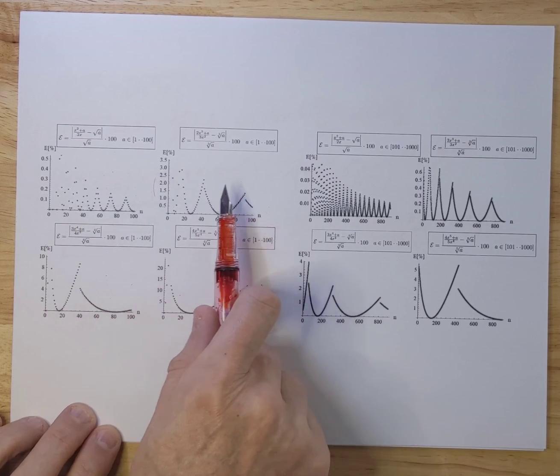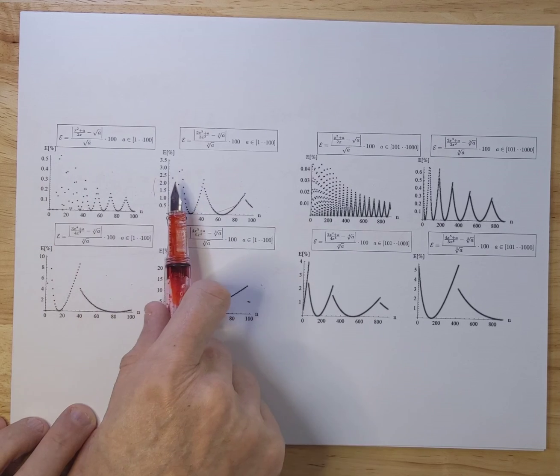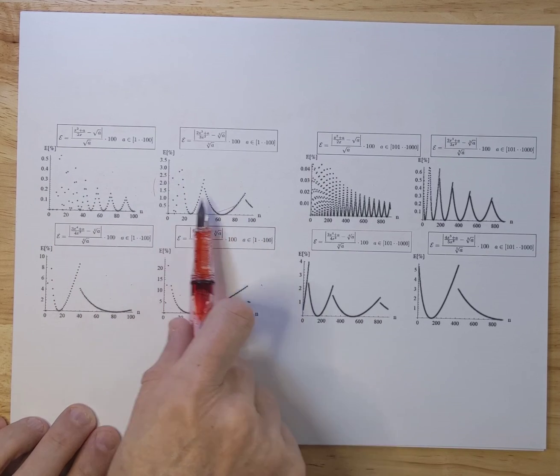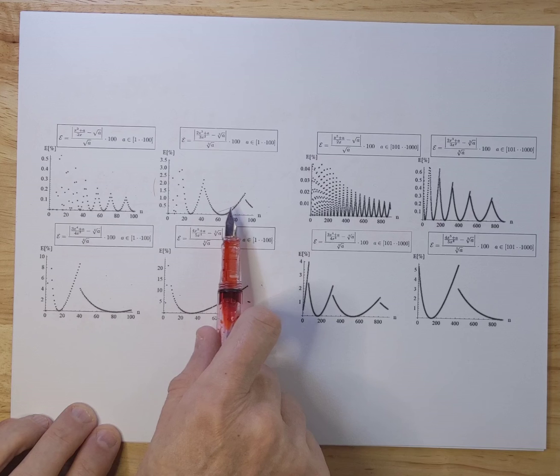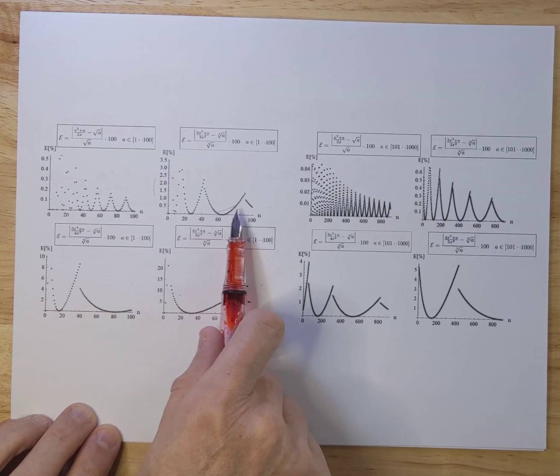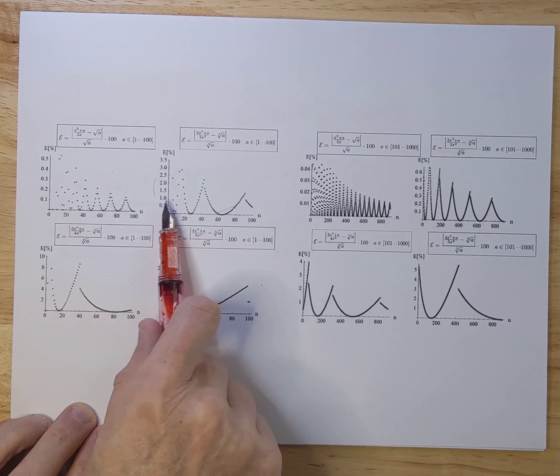For cube routes, you can see that the errors are a little bit bigger for smaller numbers over here. But when you go, say, for instance, between 60 and 80, the error is no more than a percent.